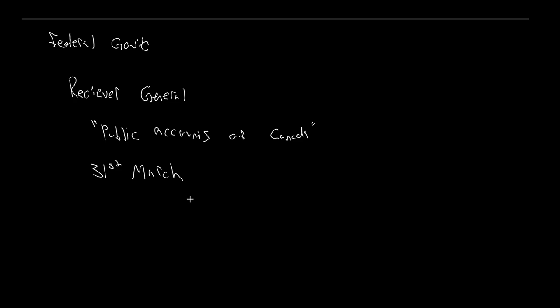This is no small task — the Public Accounts of Canada are released in three volumes. Volume one is a summary and analysis of the financial transactions of the government. Volume two is the financial operations of the government by ministry or department. Volume three is additional information and analysis.